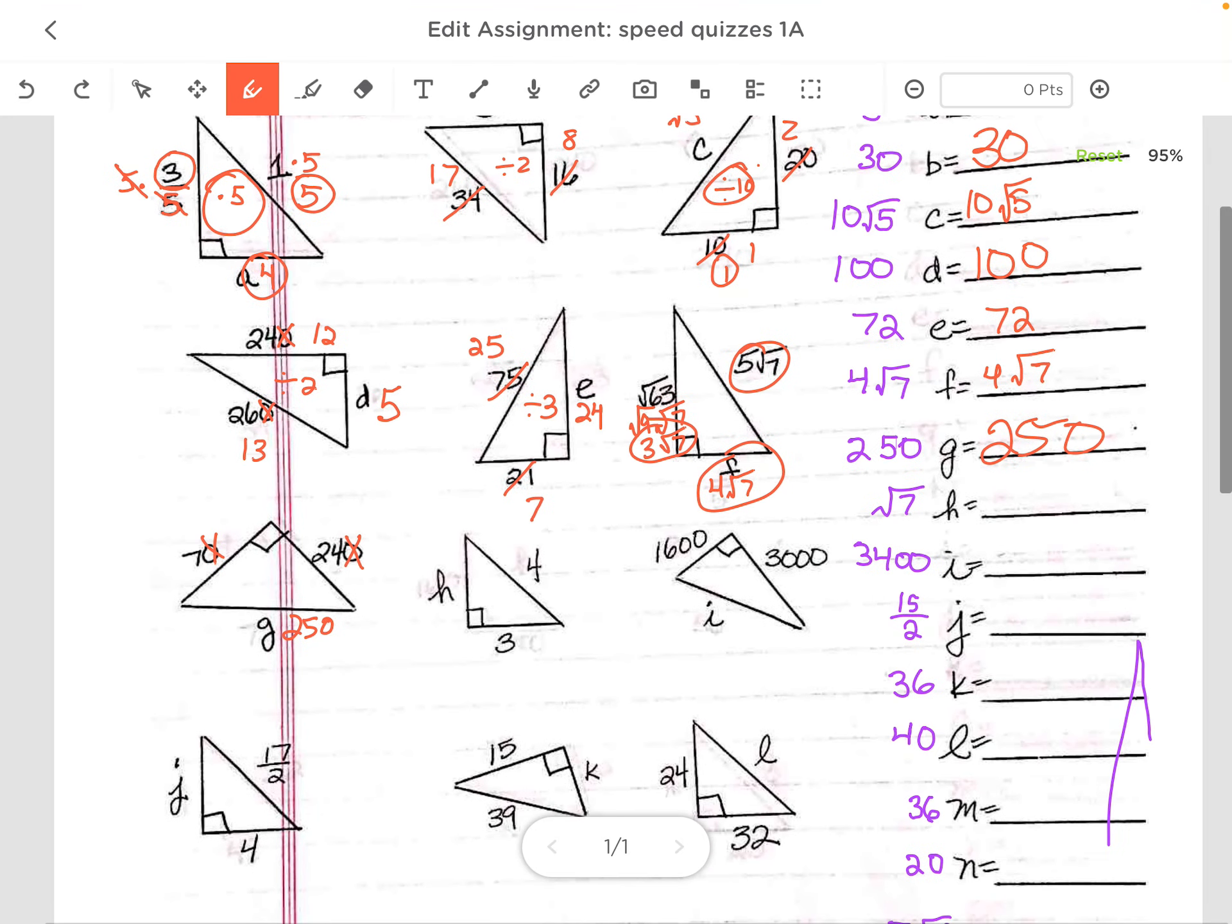This is how I would do it. I can't reduce anything. This is not a 3, 4, 5. So I would square this, square this. I'm working with a leg and a hypotenuse. So I subtract it and I get 7, take the square root, answer's the square root of 7.